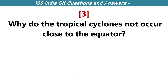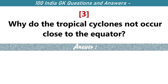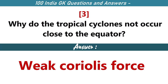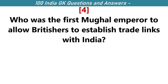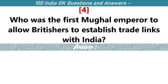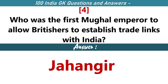Why do the tropical cyclones not occur close to the equator? Weak Coriolis force. Who was the first Mughal Emperor to allow British to establish trade links with India? Jahangir.